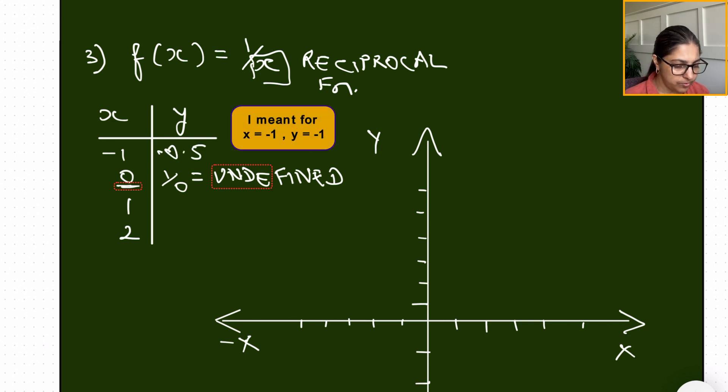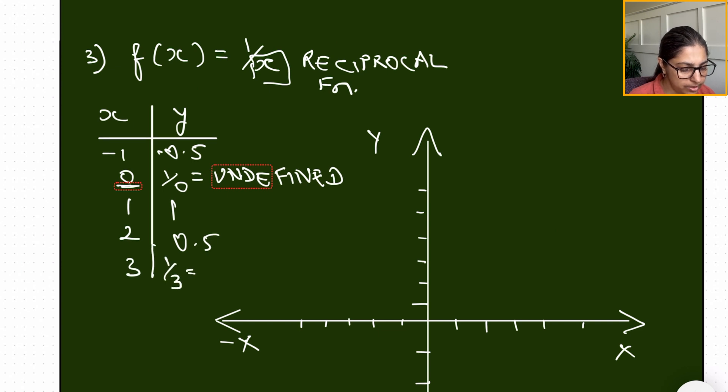This is going to be negative 0.5. What does that tell you? It goes in both negative and positive directions. Two is 0.5, and if x was three, we will get one over three, which is going to be 0.333. So once we go less than zero, meaning the input is less than zero, we will have a negative.